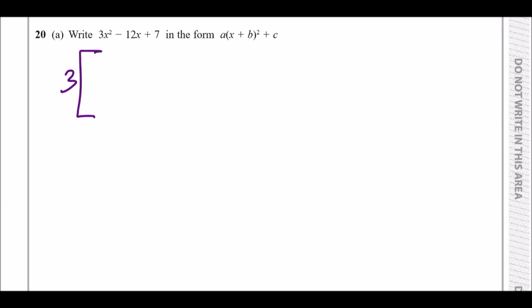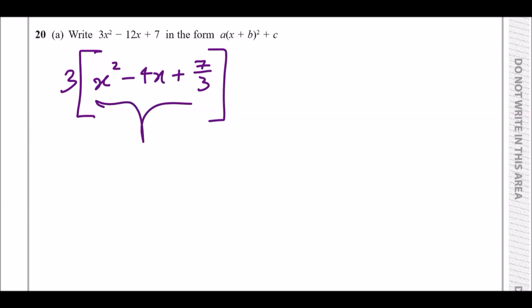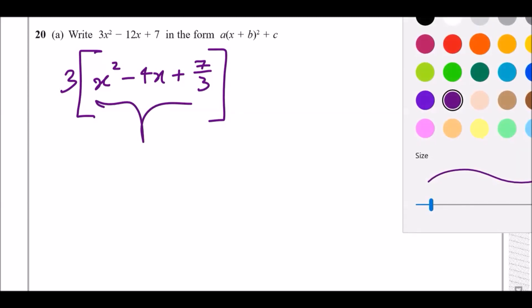Taking out three and using a big square bracket, we have x squared divided by three minus four x. Seven is not divisible by three, so if you divide it by three you just get seven over three. Leave it in that form. Now we're going to complete the square of this inside bit.